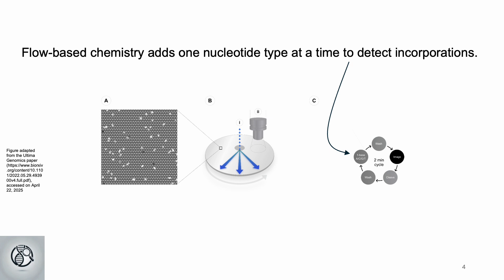Nucleotides are added one type at a time, detected by flow signal, and imaged via fluorescent labels without reversible terminators. After imaging, the labels are cleaved and washed away before the next cycle.